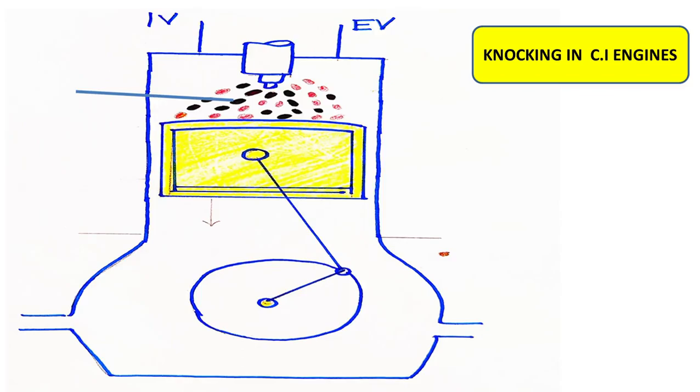Friends, today we are going to discuss the reason of knocking in CI engines, that is the phenomena of knocking in the CI engine. We know that in CI engines the fuel is directly injected into the combustion chamber. We all know that the injection process takes place over a definite interval of time.